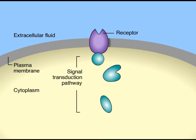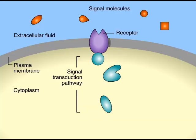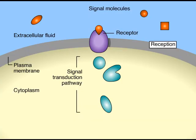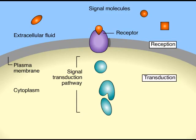Cells communicate with one another by means of chemical signals. For the receiving cell, there are three stages in the signaling process: reception, transduction, and cell response.